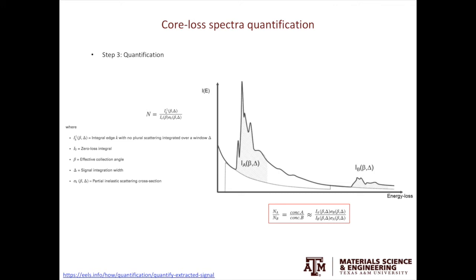If you are looking at the compositional ratio of two elements, for example say A and B in your material, you can easily use NA over NB to obtain it. On the right-hand side of this equation, it is simply IA multiplied by sigma B over IB multiplied by sigma A.